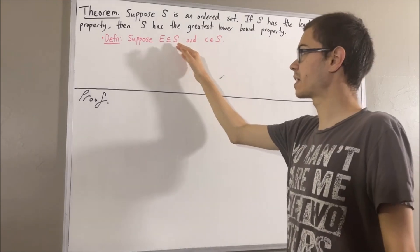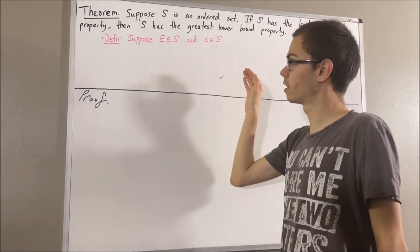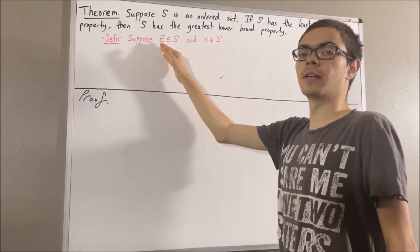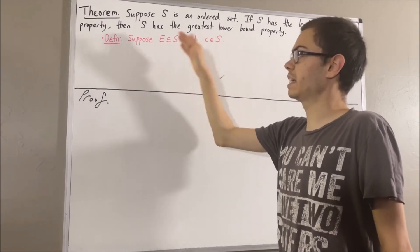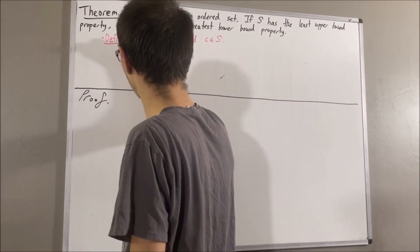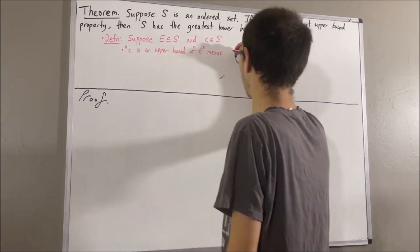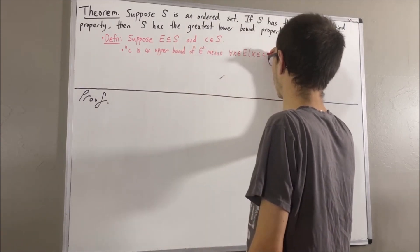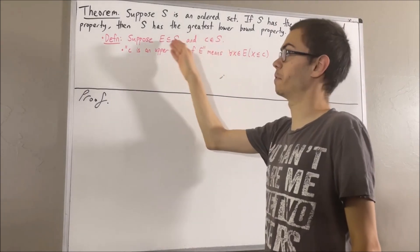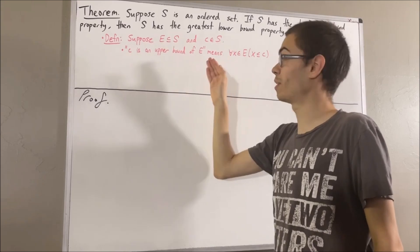Suppose E is a subset of S and C is an element of S. To say that C is an upper bound of E means for all X in E, X is less than or equal to C. To say that C is a lower bound of E means for all X in E, X is greater than or equal to C.